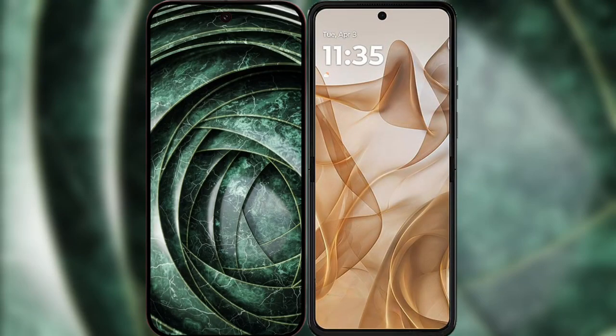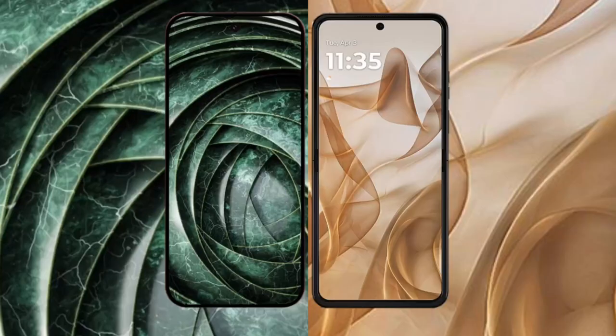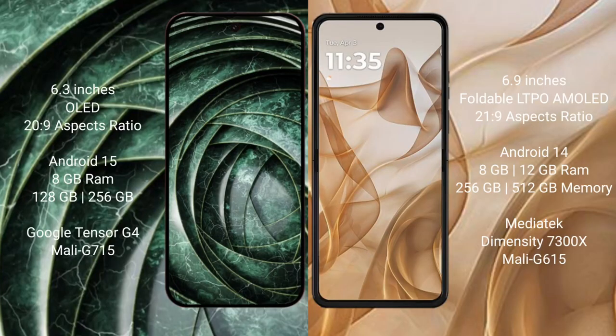I will compare the new Google Pixel 9a with the Motorola Razr 50. The Google Pixel 9a features a 6.3-inch OLED display, while the Motorola Razr 50 features a larger 6.9-inch foldable LTPO AMOLED display.